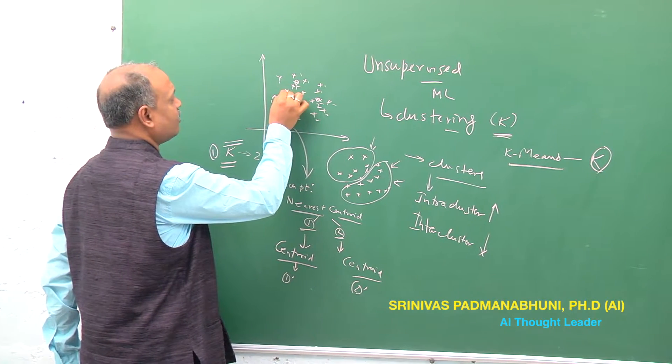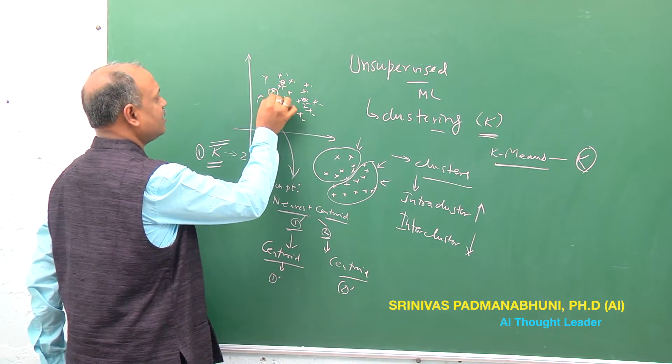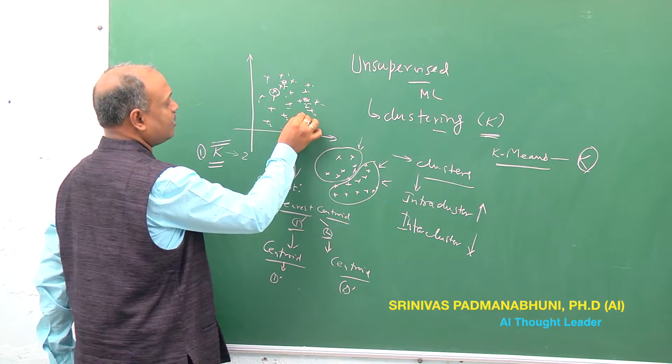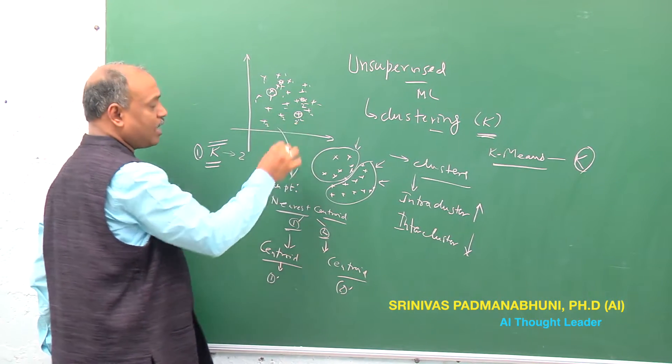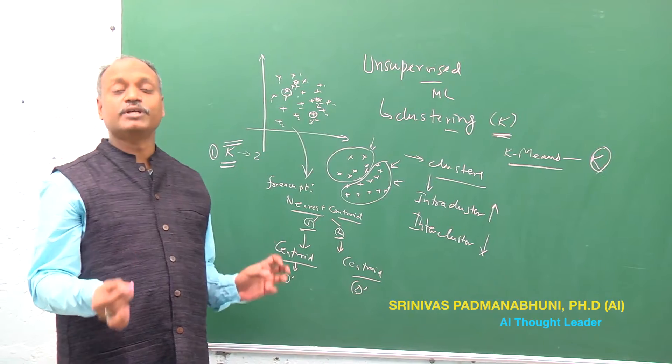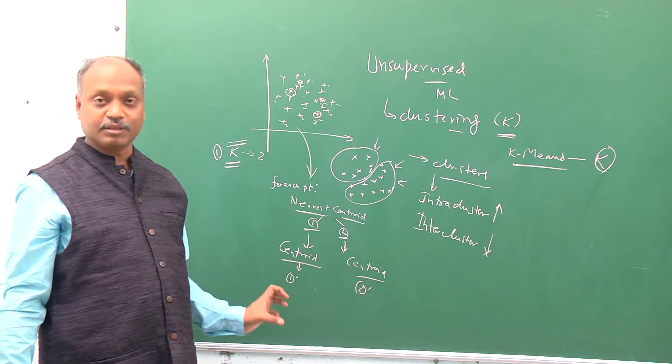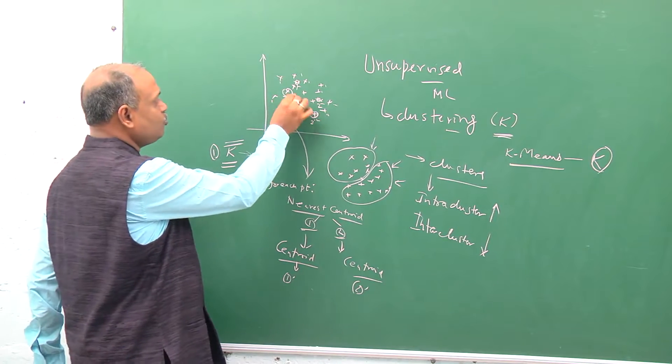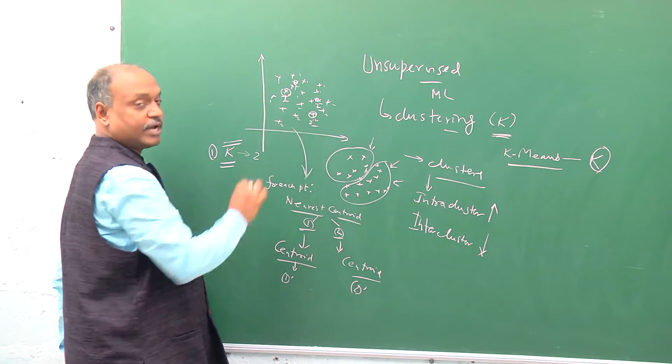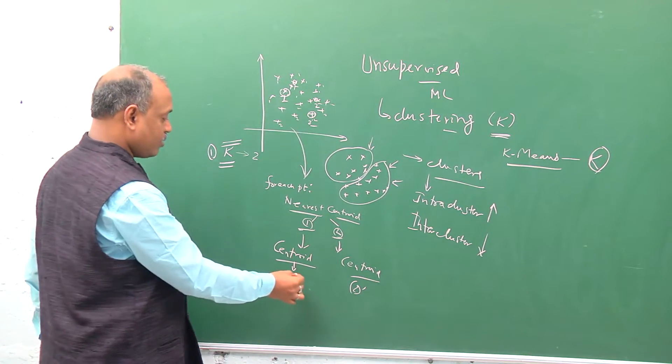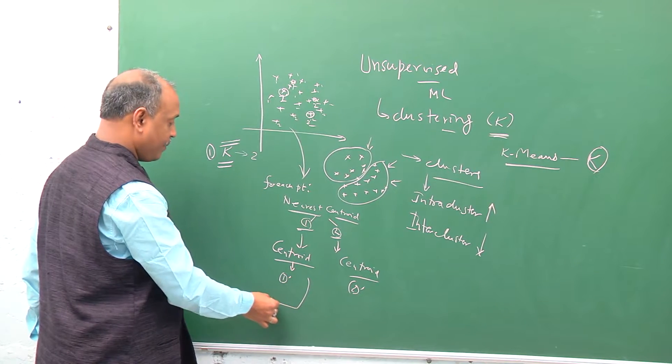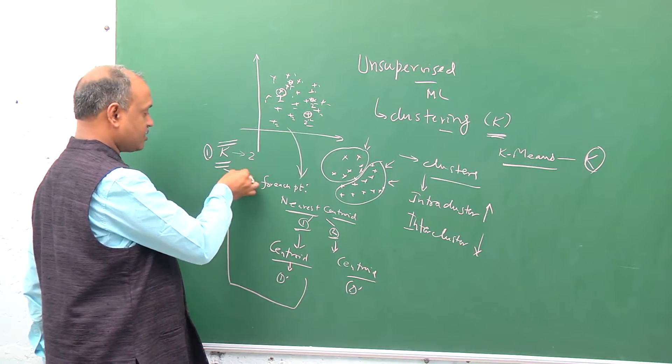This is probably the centroid, so we'll say that this one dash is the new centroid. This is two dash. Now we have two new centroids which are the actual centroids of points identified by the two clusters. Now we can go back and repeat the same process.